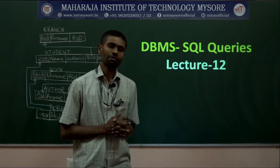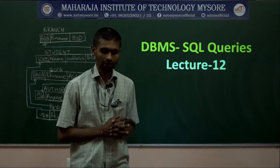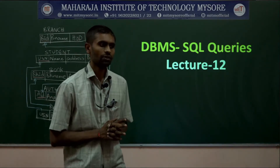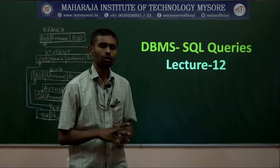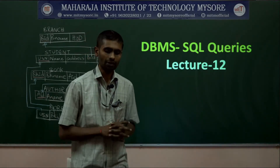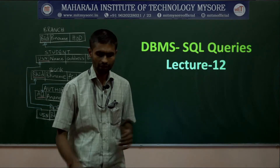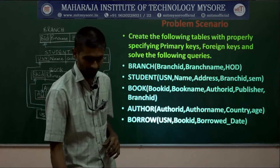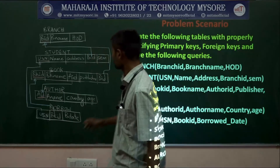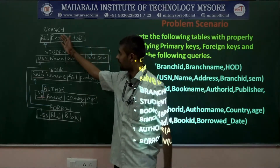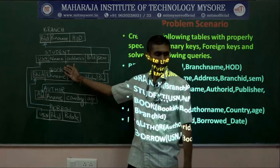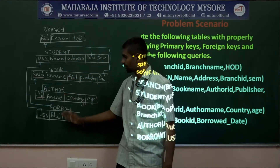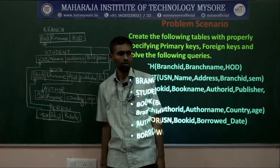In the previous session, we started our discussion regarding SQL queries. There we took one small scenario which consists of the following tables: branch, student, book, author, and borrow.